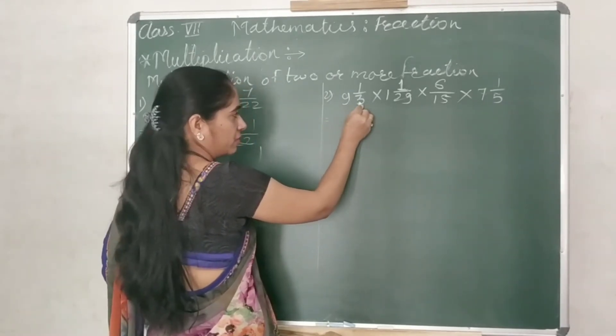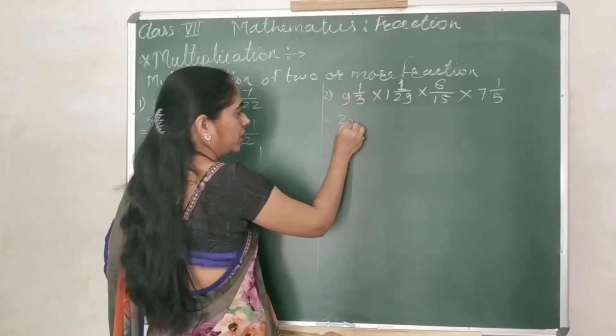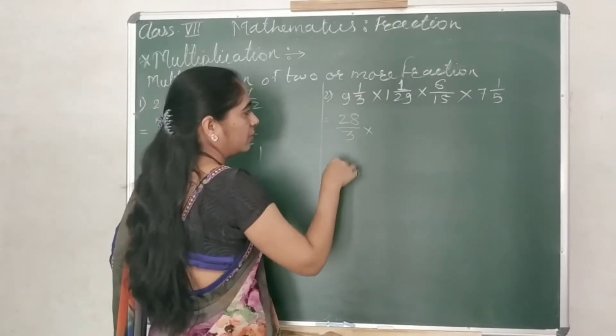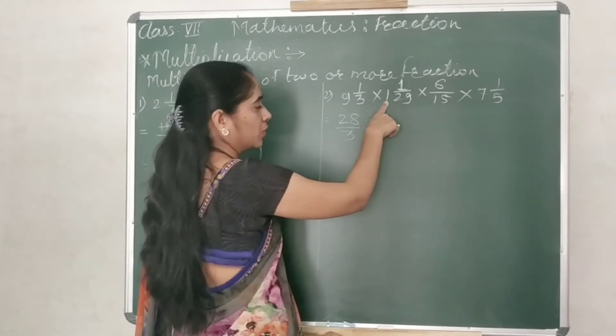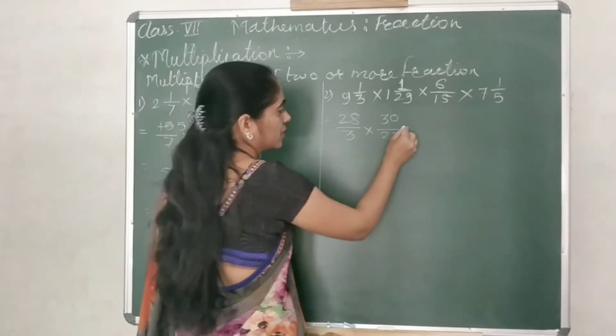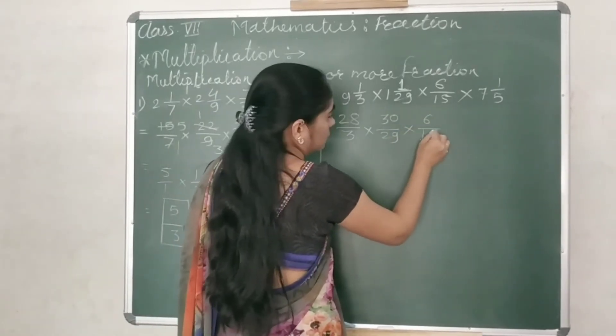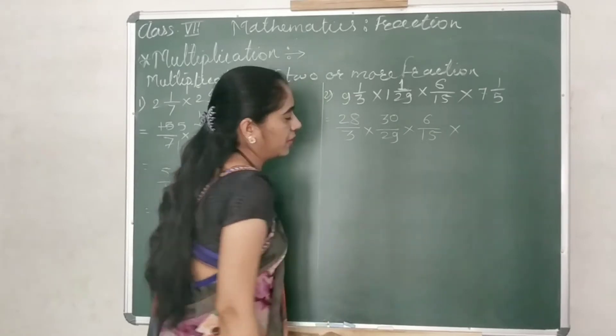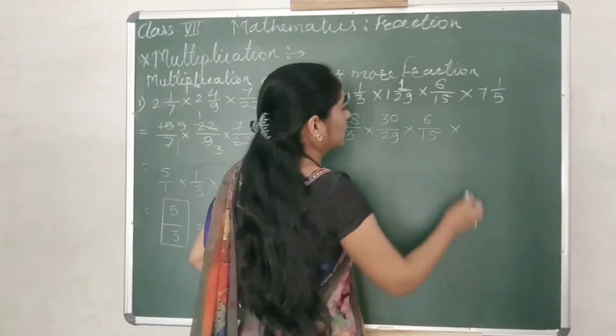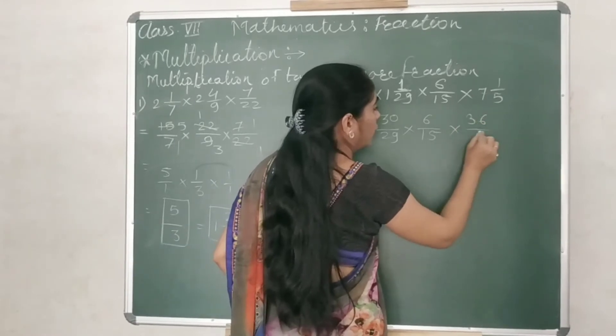9 threes are 27, 27 plus 1, 28 upon 3. Multiply. 29 ones are 29, plus 1, 30 upon 29. 6 upon 15, 6 upon 15 as it is. Multiply. 7 fives are 35, 35 plus 1, 36 upon 5.